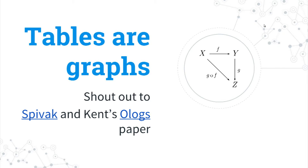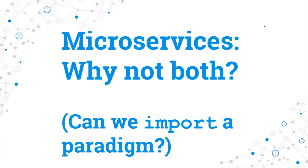Shout out to some category theoreticians out of MIT who are really into this and know a lot about how ontologies and knowledge representation go. So the question is, we're all gophers. We write microservices. Why not have both? Why can't we also talk about our data stores, key value stores, SQL tables, and so on, as graphs as well? Can we import a paradigm? Can we compile in the ability to talk in this way about these problems?